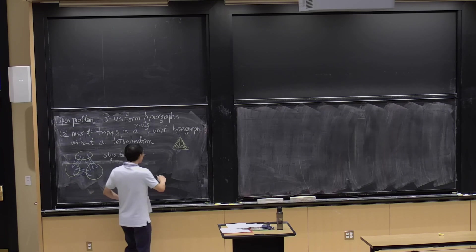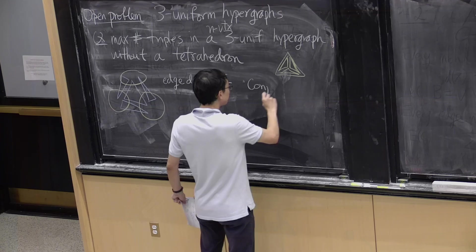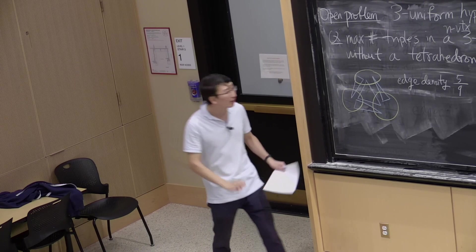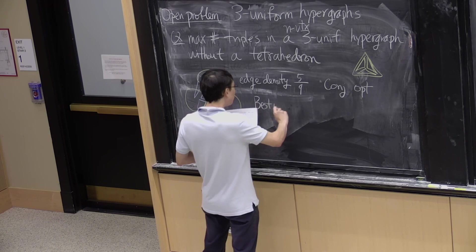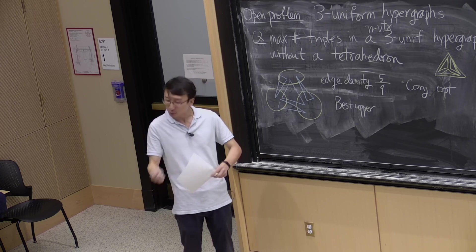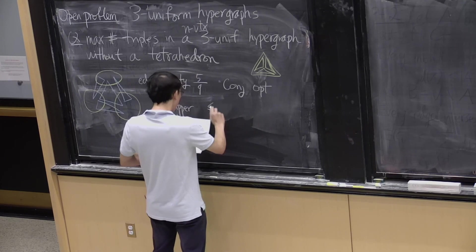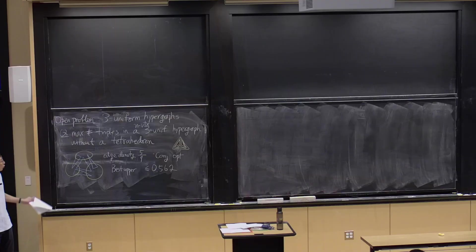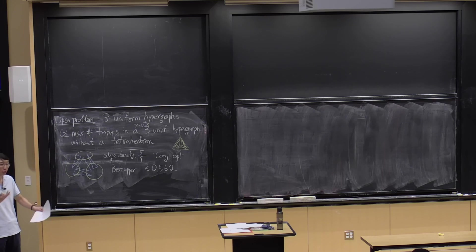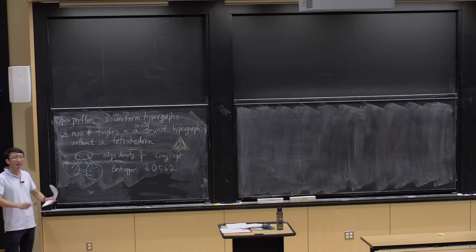The edge density of this construction is 5/9 of all possible triples. It is conjectured that this is optimal. However, we are quite far from proving this. The best upper bound currently available — found using flag algebras, essentially a computerized way to prove such inequalities — is something like 0.562. It is a major open problem to either prove or disprove that this construction is the optimal one.